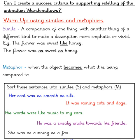Next, we have a metaphor. A metaphor is when the object becomes what it is being compared to. For example, 'He was a roaring lion.' For this task, I would like you to sort the sentences in the box into whether they are similes or metaphors. Now it's time to pause the video and have a go at this task. When you are finished, click play and we will go through the answers.